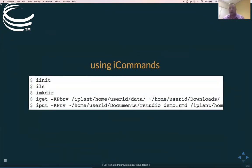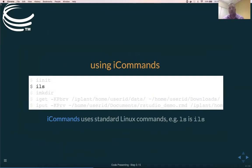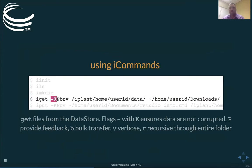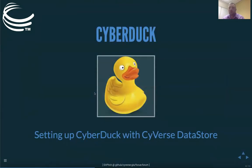If you want to use iCommands, you initiate a connection using an iinit command using the same language as Linux. Instead of an ls command for listing a directory, you use ils to list your data store. If you want to create a new directory, instead of mkdir you say imkdir. If you want to move data off the data store, you use iget — in this example I've got some flags to make sure data come in uncorrupted, a bulk flag, a recursive flag to go through an entire directory, and a verbose statement. These are typical Linux commands if you're familiar with Linux. You can also push data back up to the data store using an iput command. All of these are linked back to our wiki. Cyberduck is a third-party application that runs in Windows or on a Mac to move files on and off our system.